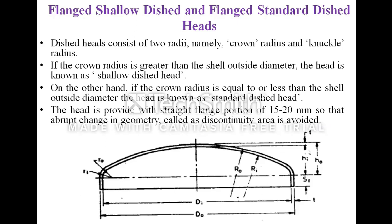The next type is flange shallow dish and flange standard dish heads. Dish heads consist of two radii: the crown radius and the knuckle radius. The knuckle radius is the radius at the corner, which is used to avoid sudden change in shape. If the crown radius is greater than the shell outside diameter, the head is known as shallow dished.